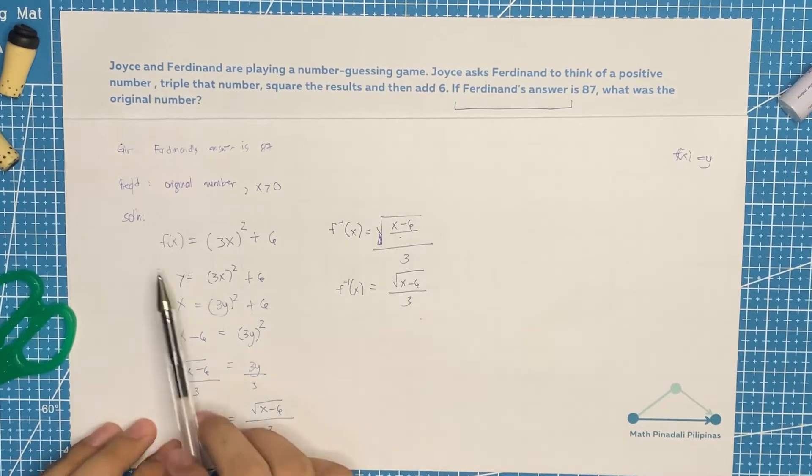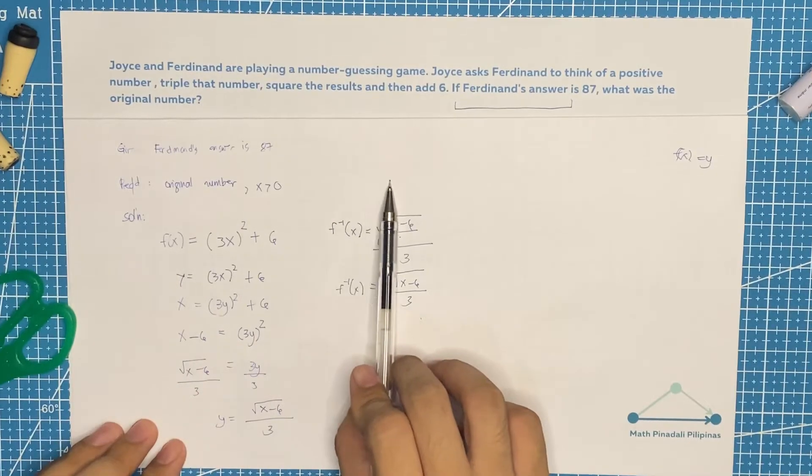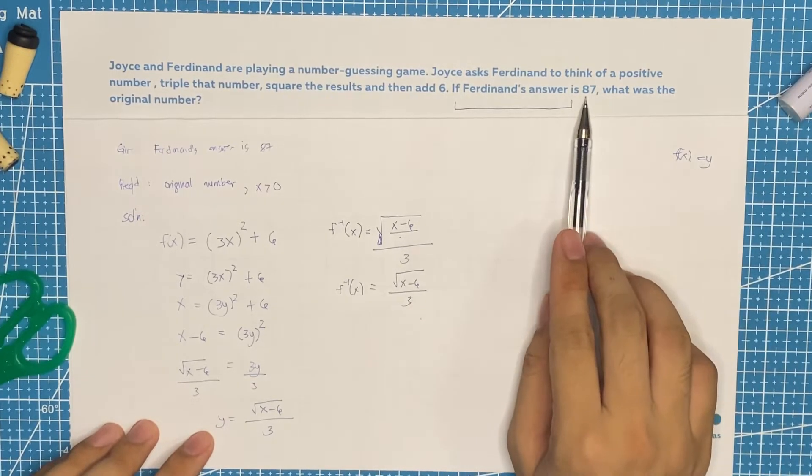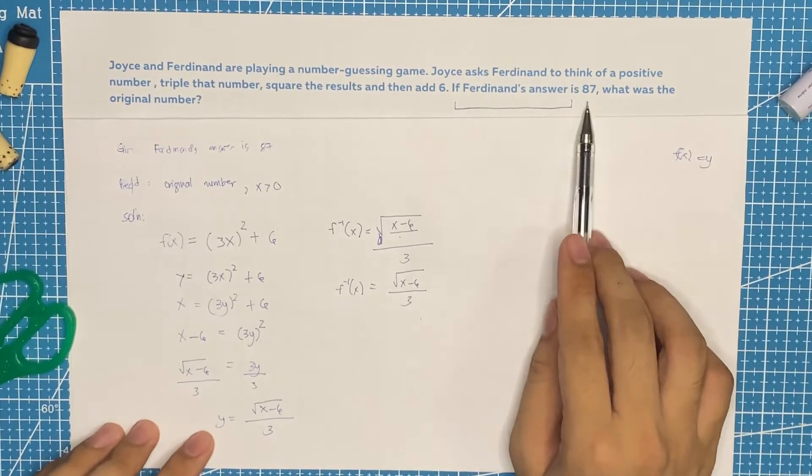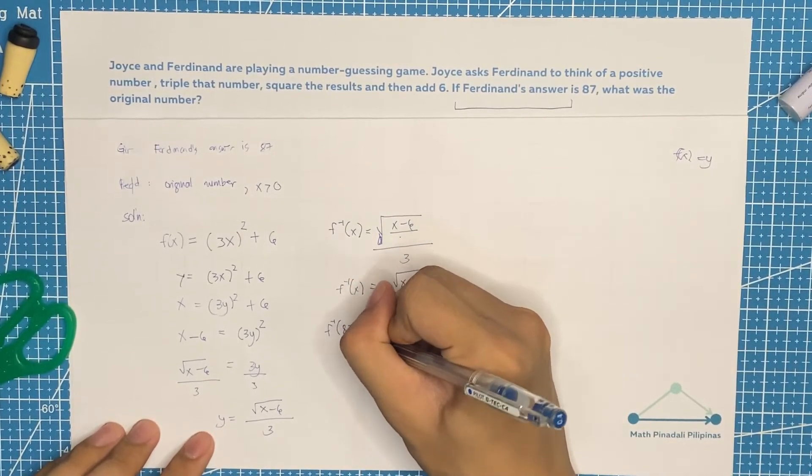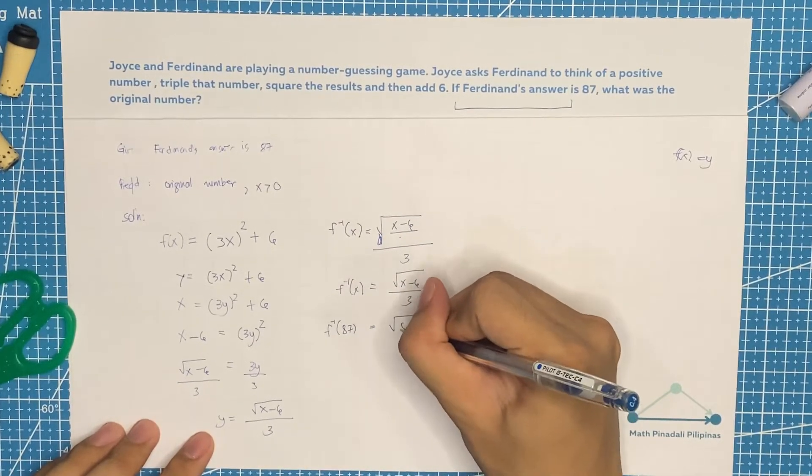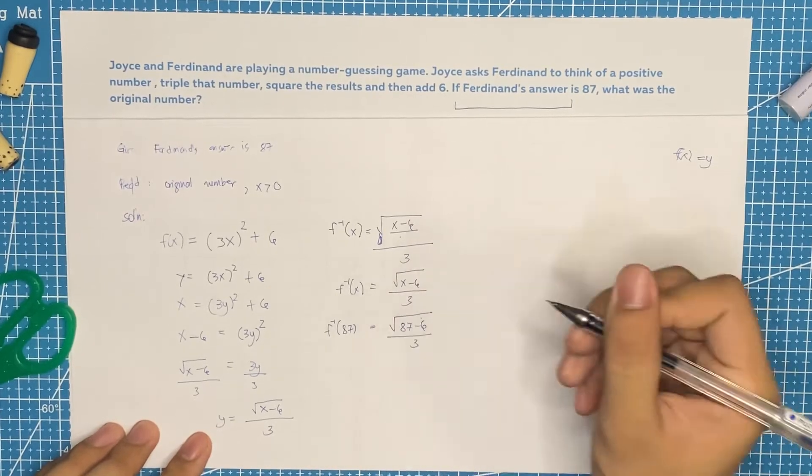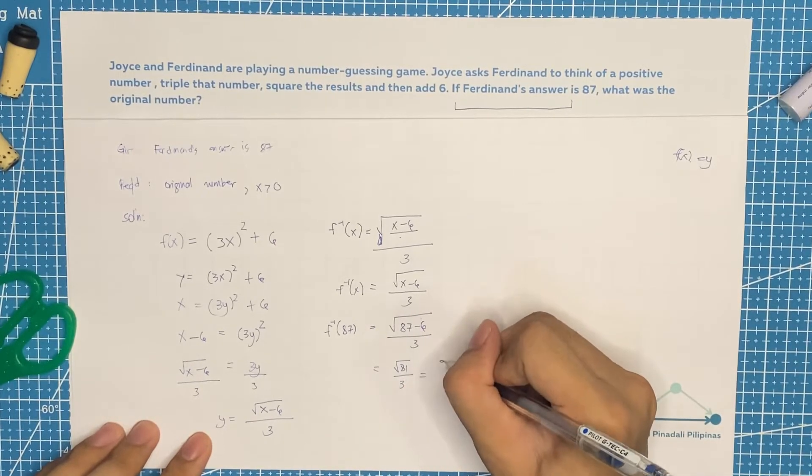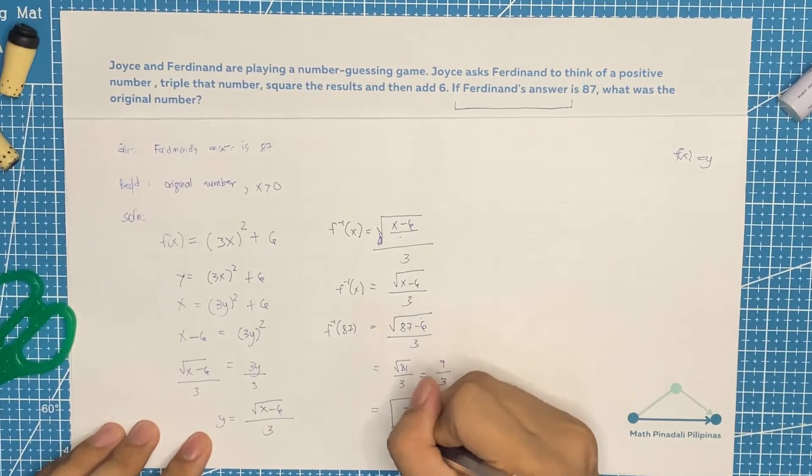This is our function for getting Ferdinand's answer. Now, since we've made the inverse function of this one, our input here would be the answer of Ferdinand, which is 87. So that would be f inverse of 87 is equal to square root of 87 minus 6 over 3. That would be square root of 81 over 3. That would be square root of 81 is 9 over 3. So our answer, our original number is equal to 3.